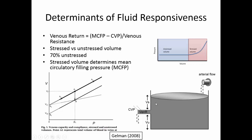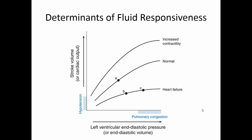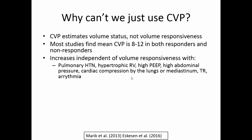A more familiar figure depicting fluid responsiveness is the Frank-Starling curve. What we want to do is identify patients on the steep part of the curve. People have different curves based on contractility and afterload, but you don't know which curve your patient has or where they are on it — and CVP gives you no information about either of those questions. By the same token, wedge pressure doesn't either.